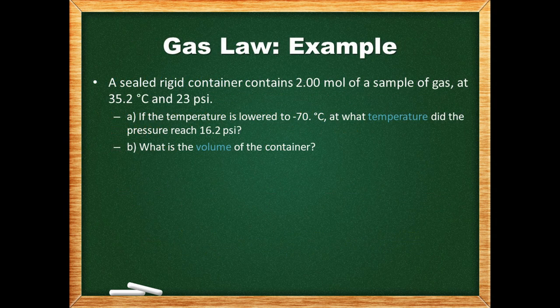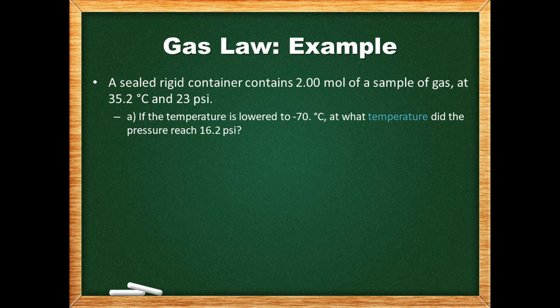Now let's look at an actual example problem. A sealed rigid container contains 2 moles of a sample at 35.2 degrees Celsius and 23 psi. Rigid means the container won't change shape, so the volume will be constant. If we lower the temperature to -70 degrees Celsius, at what temperature did the pressure reach 16.2 psi? The -70 degrees Celsius is essentially a red herring — it won't be used in our calculation, though it indicates our answer should be between 35.2 and -70 degrees Celsius. Since volume and moles don't change, only pressure should change with temperature.